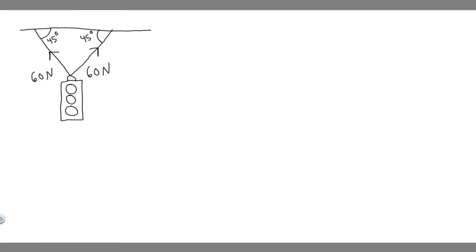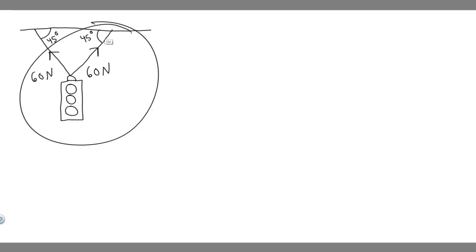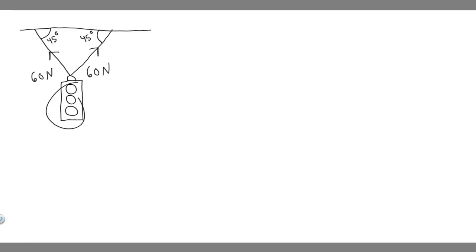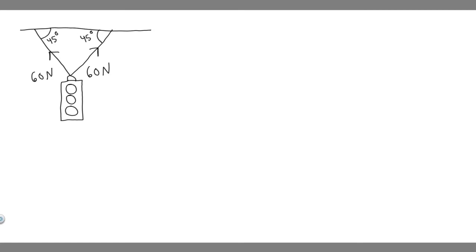In this problem, we're told: what is the resultant force exerted by the two cables supporting the traffic light in this figure? And then B, what is the weight of the light? This is the diagram — we have this traffic light being held up by two cables which have a tension of 60 newtons, and they have an angle relative to the top of 45 degrees each.